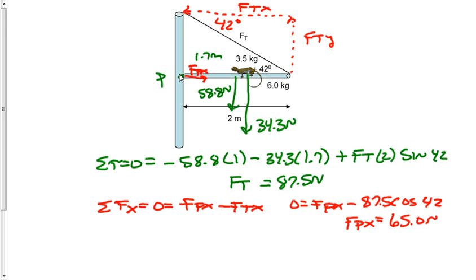Next, we need to find the force pole in the y, which we point the opposite way. Force pole y. We're going to say the sum of all forces in the y direction equals 0 equals force pole y, plus the value of force tension y, which would then be 87.5 times the sine of 42.